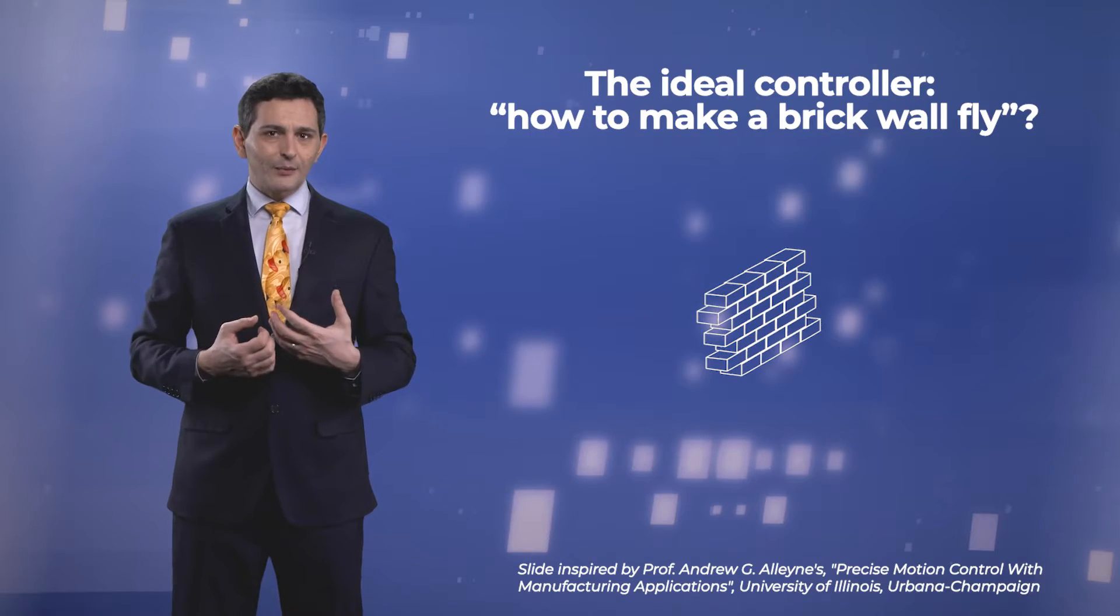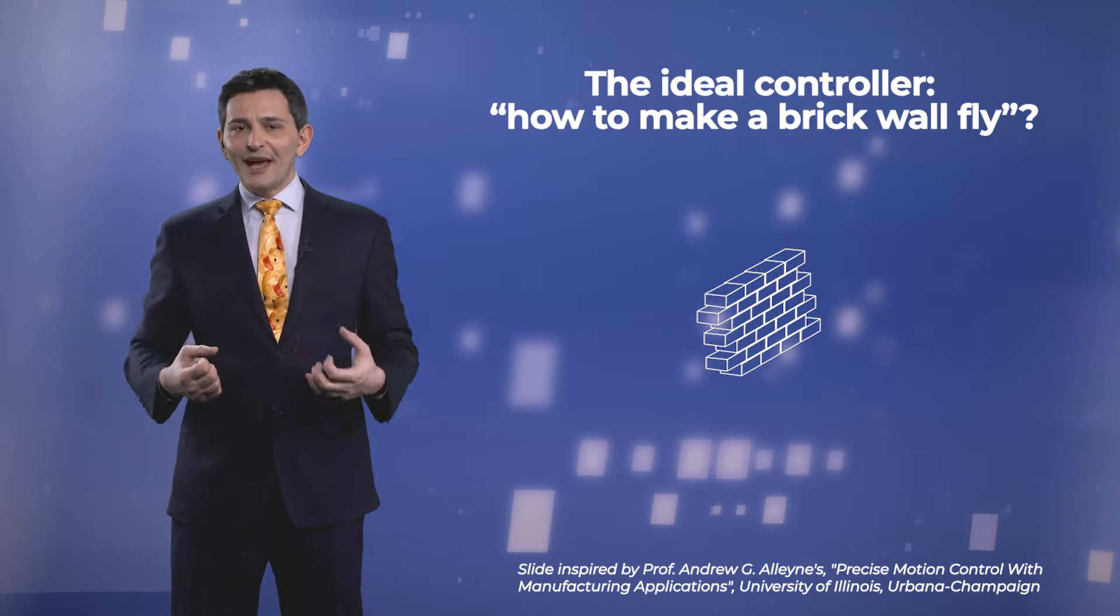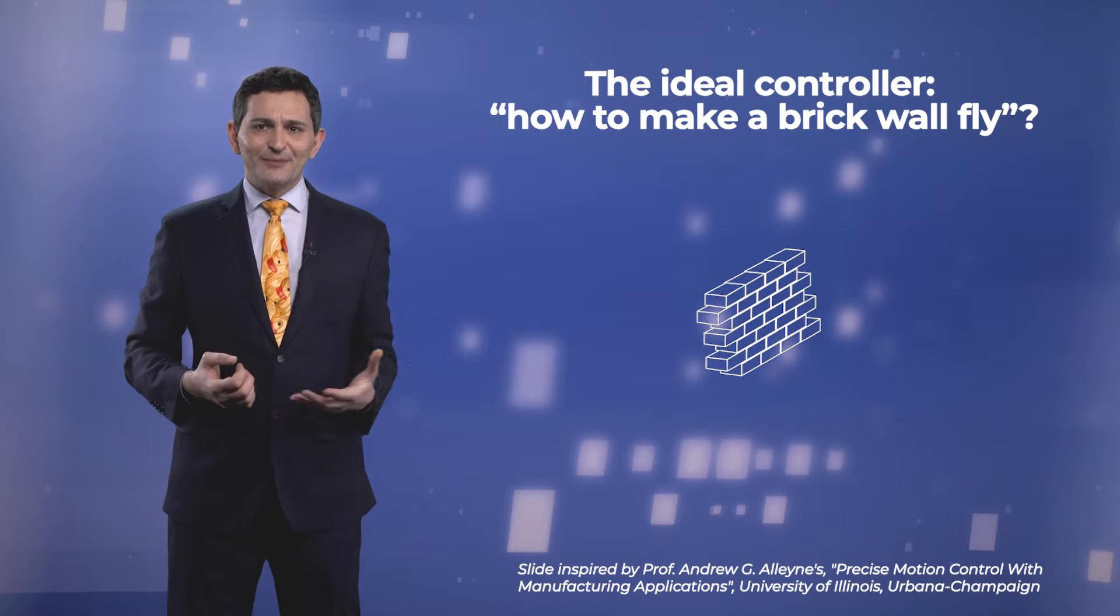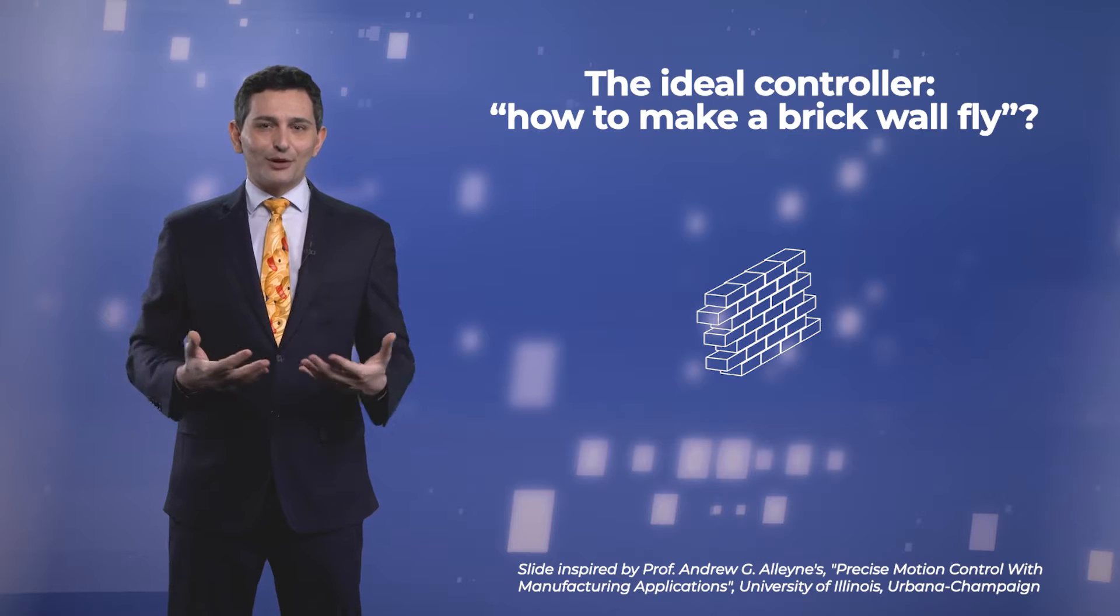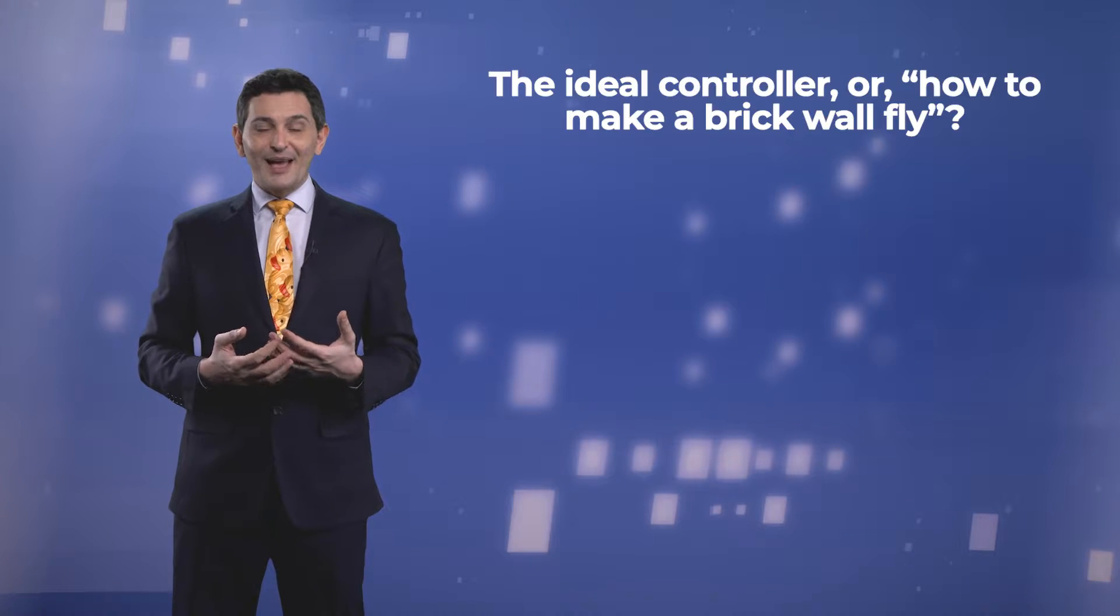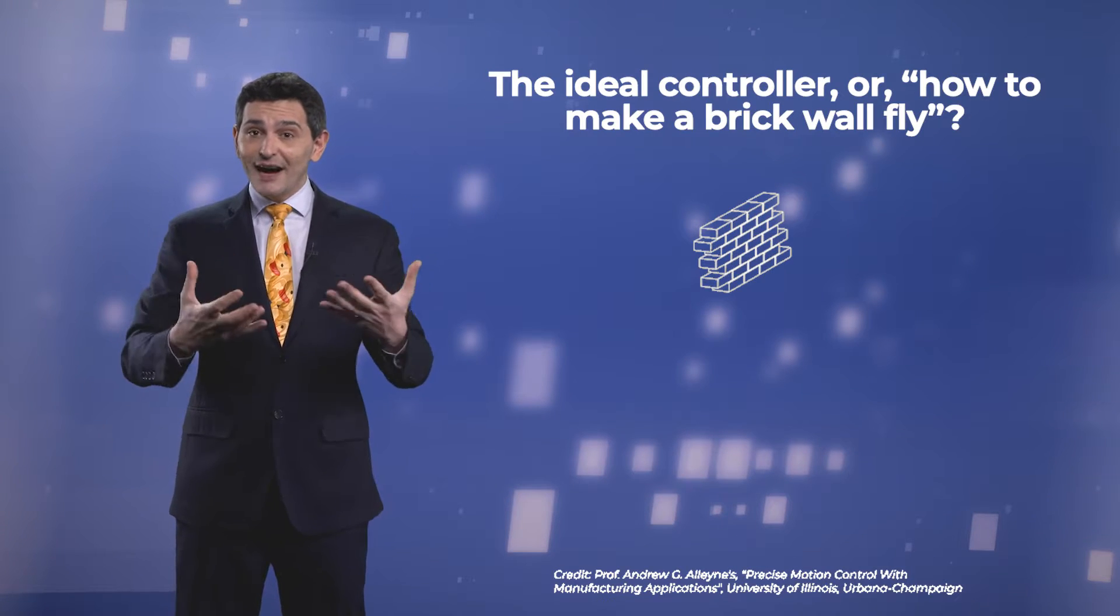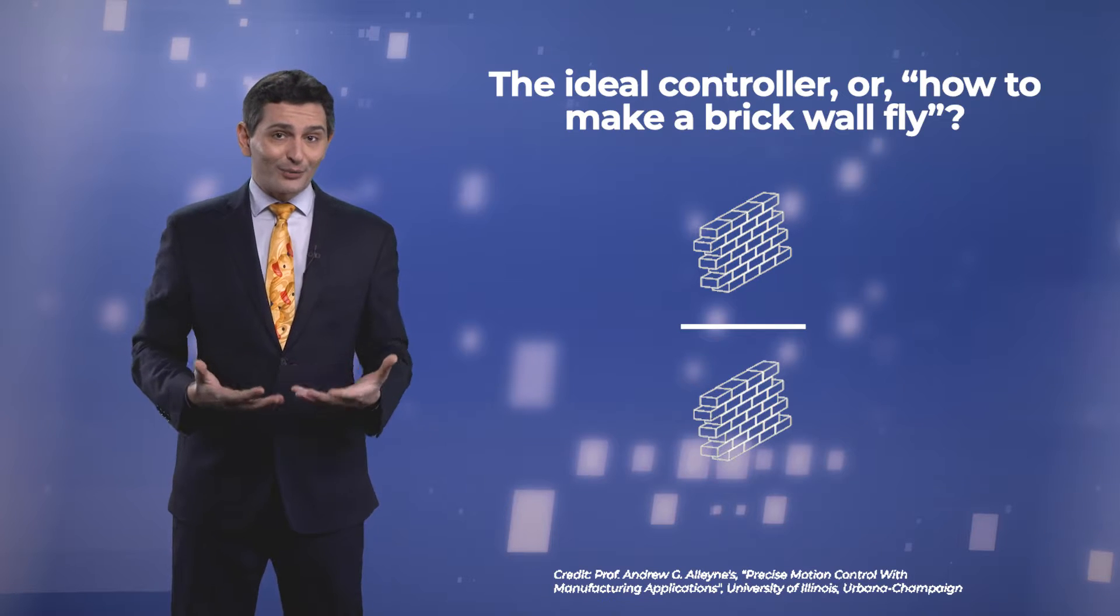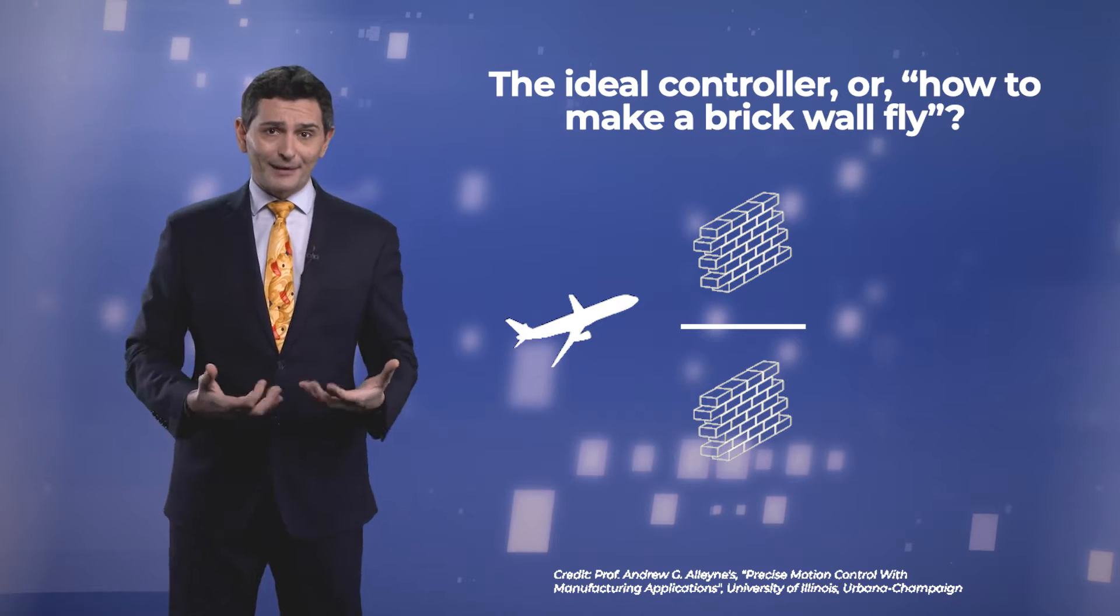Suppose, as control engineers, that we are given a brick wall and we are asked to make it fly. What could be an infallible approach? Naturally, to divide the brick wall by an identical brick wall and then multiply it by an airplane.